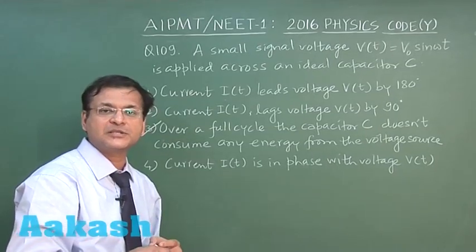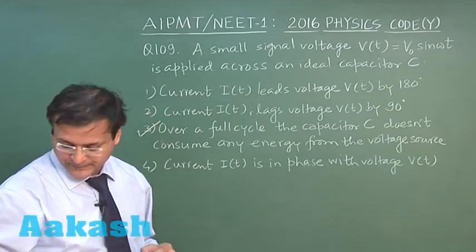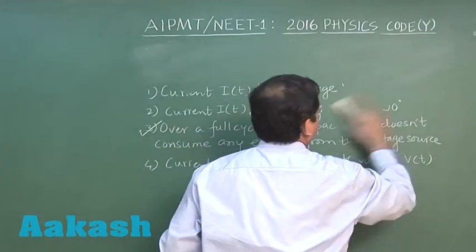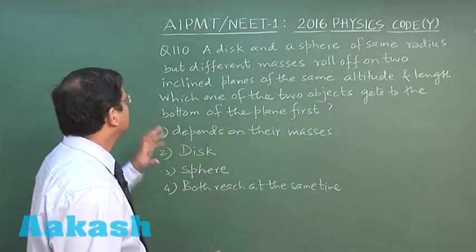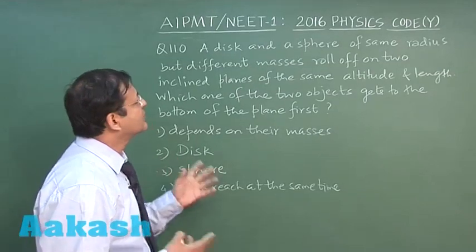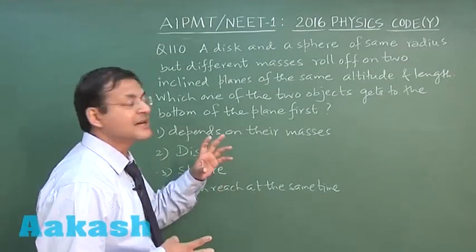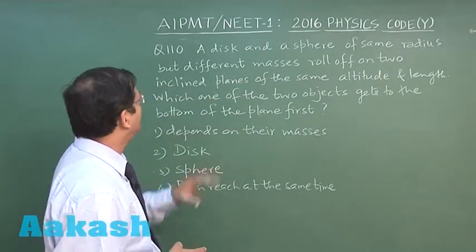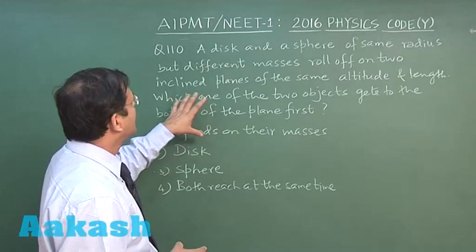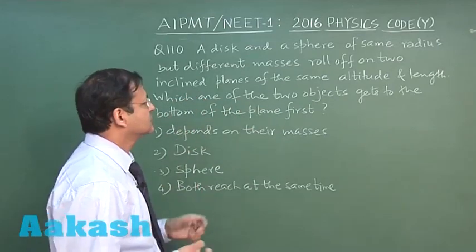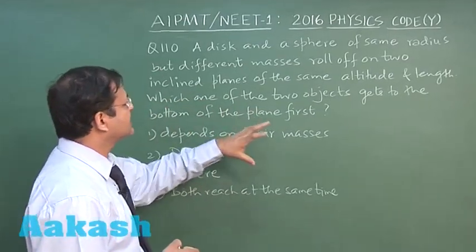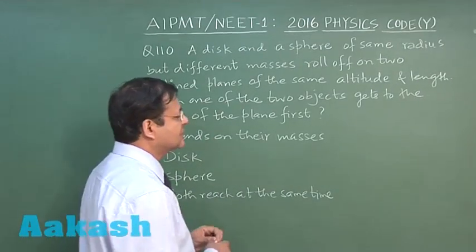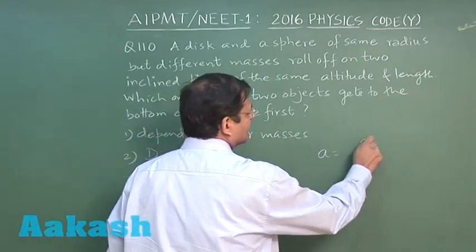Let us switch over to next question that is question 110. This question is about pure rolling down an inclined plane. It says that a disc and a sphere of same radius but different masses roll off on two inclined planes of the same altitude and length. Which of the objects gets to the bottom of the plane first?